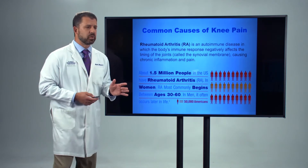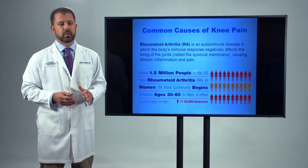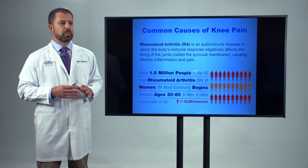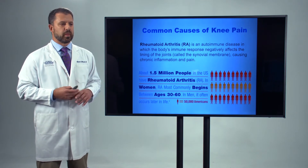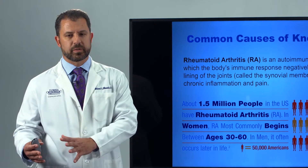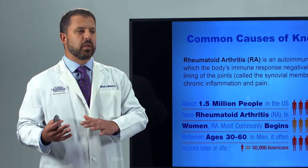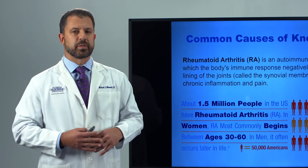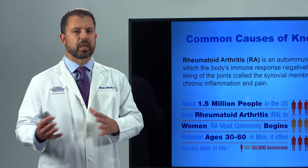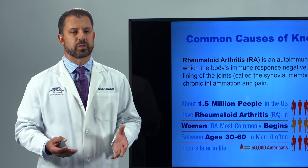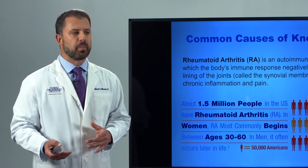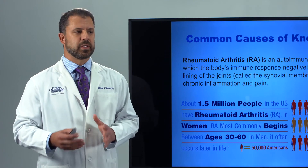Now, rheumatoid arthritis is less common, but still there's about 1.5 million people that have rheumatoid arthritis. Rheumatoid arthritis is a bit different from osteoarthritis in the sense that it's an autoimmune disease where cells in the body are attacking their own cartilage, causing destruction of the cartilage. So there are similar symptoms but a different disease process.